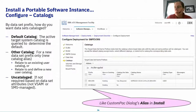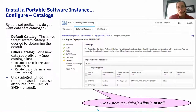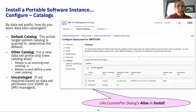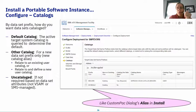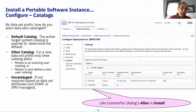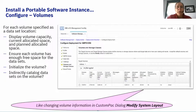The next item is Catalogs. Where do you want these datasets cataloged? Some datasets don't need to be cataloged — PDSs and PDSEs, for example, you can leave uncataloged if you choose. VSAM datasets and SMS-managed datasets will need to be cataloged. You can tell us whether they're going into an existing catalog or if you want to create a new user catalog — the dialog handles creation of the new user catalog. This is equivalent to the alias option in the ServerPac dialog.